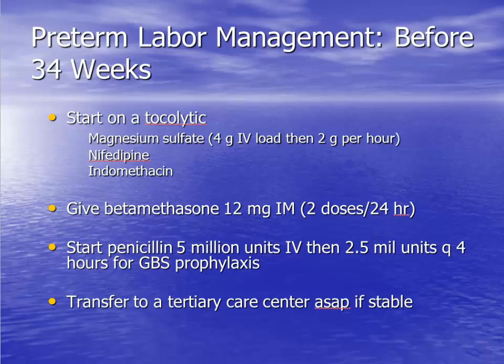Once preterm labor is diagnosed, management depends on the gestational age of the fetus. Women diagnosed before 34 weeks should undergo specific therapy in an effort to delay delivery and decrease risk to the fetus if delivery occurs. A tocolytic, which is a medication that helps to decrease uterine contractions, should be started. Examples of tocolytics include magnesium sulfate, nifedipine, and indomethacin. Betamethasone, which is a glucocorticoid, is administered to the mom to decrease the chance of fetal respiratory distress syndrome after delivery. Penicillin is also started for group B streptococcus prophylaxis, and the patient should be transferred to a tertiary care center that can manage a preterm infant delivered before 34 weeks.